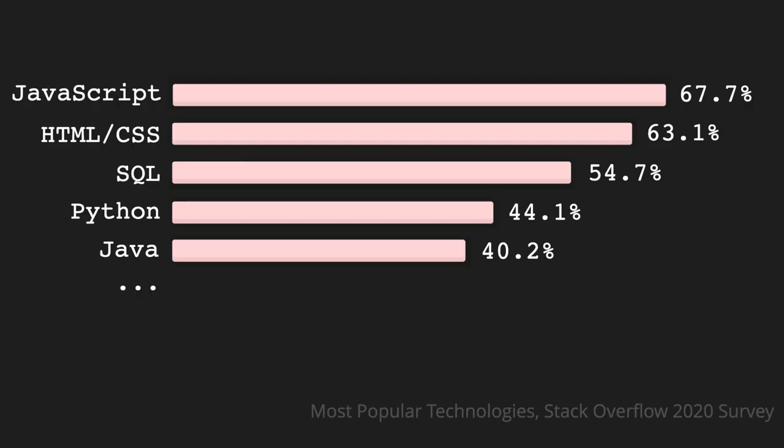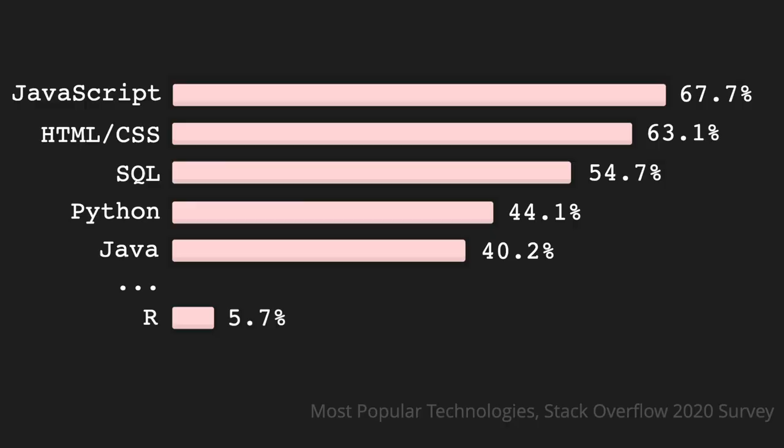Why should we care? You're probably already aware that R is a pretty great programming language for data science. There was a survey created by Stack Overflow showing that the top five most popular programming languages are JavaScript, HTML with CSS, SQL, Python, and Java — the languages that basically run the software in the world. R is not there; it has 5.7% awareness compared to 67.7% for JavaScript. So the likelihood of you having to interoperate with JavaScript, or collaborate with someone who loves JavaScript, Python, or SQL is quite high.